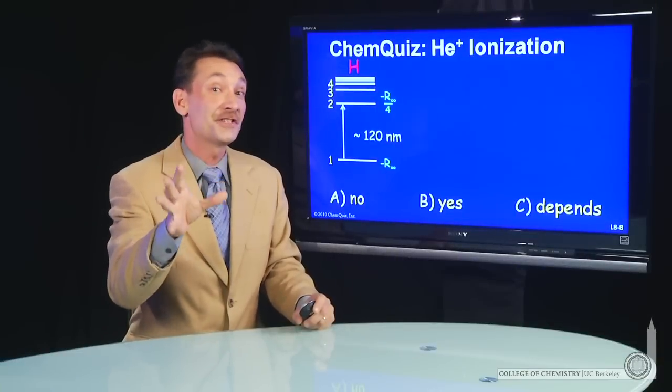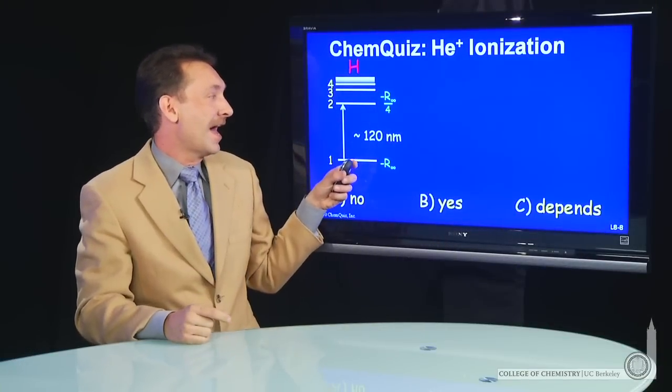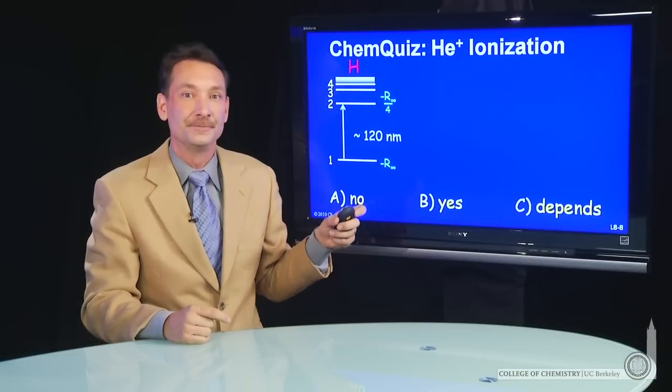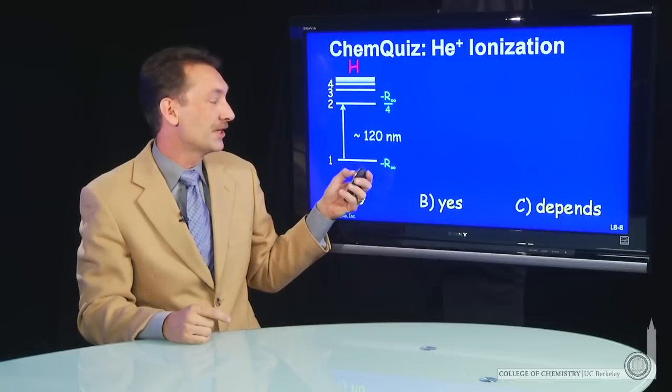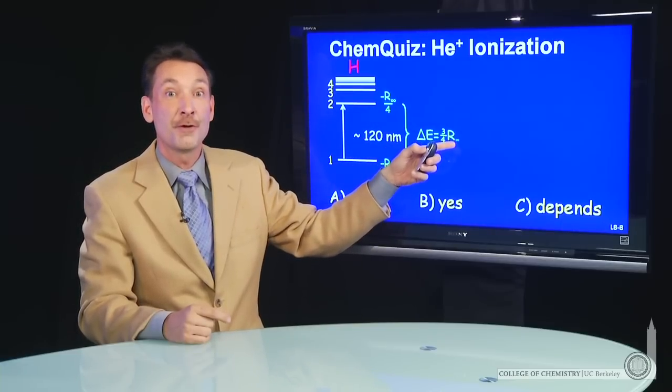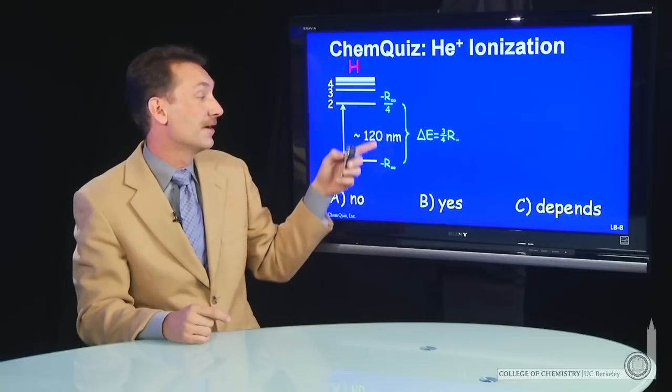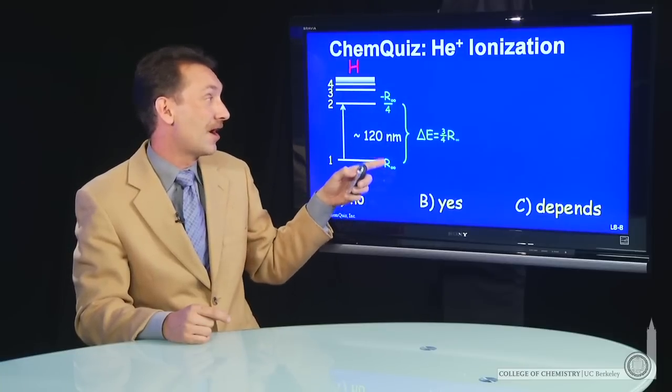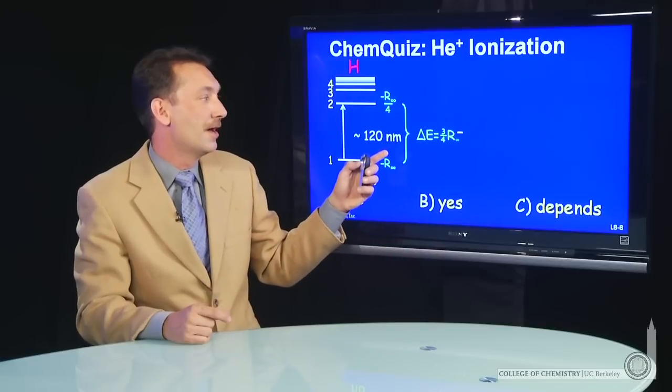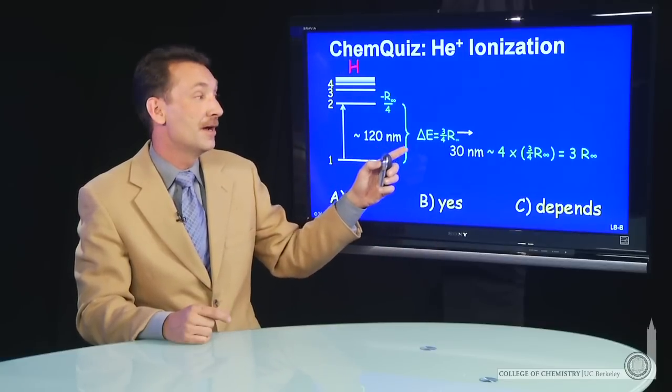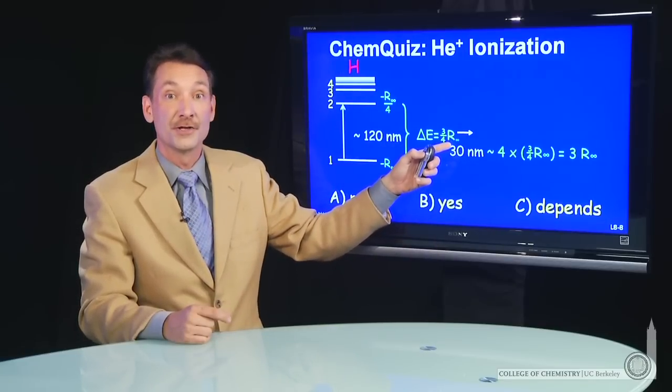So we're kind of doing a little spectroscopy here. We have a transition in hydrogen at 120 nanometers. And we do the calculation and say, well, that transition energy is about 3 quarters of a Rydberg. That's the final state minus the initial state. R minus a quarter R is 3 quarters R. So a 120-nanometer photon corresponds to about 3 quarters of a Rydberg.